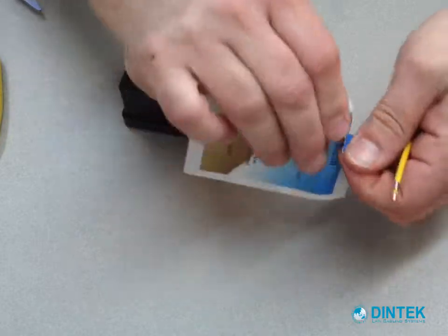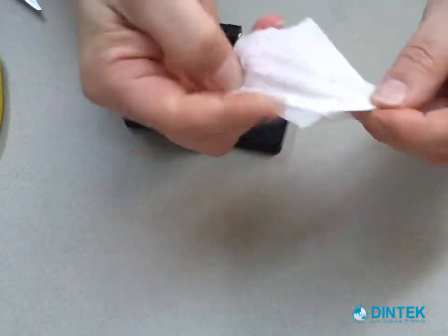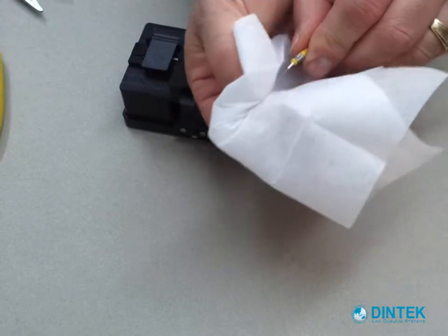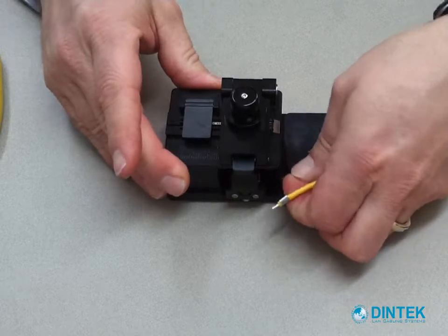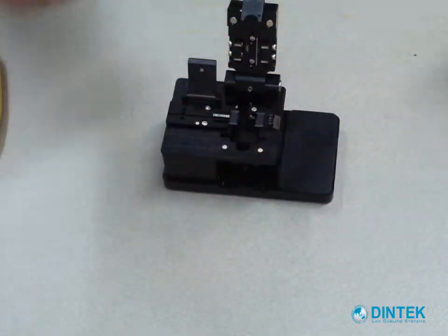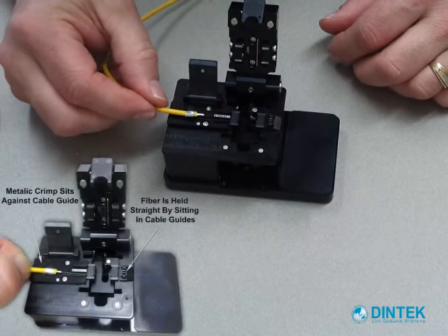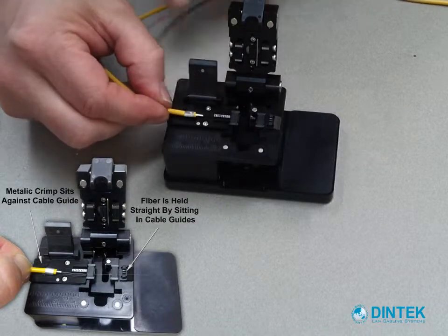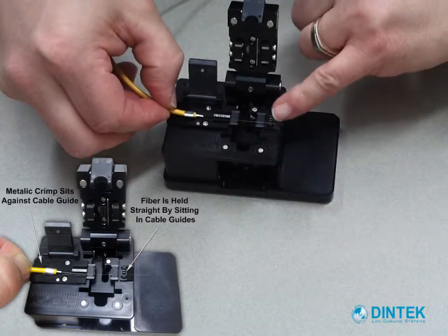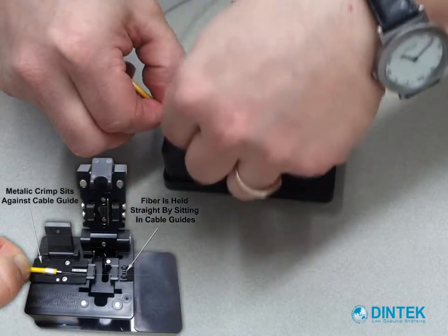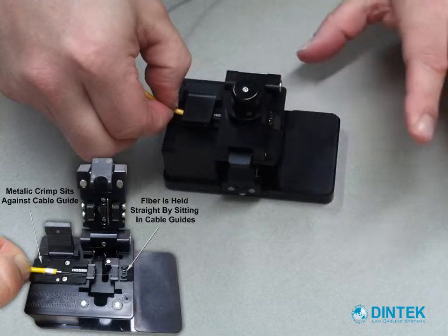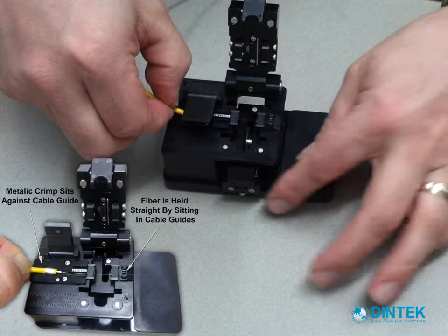Next we take our wipe and give the fiber a clean. We have got our cleaver so we will open up the cleaver lid, pushing the cleaving arm backwards. Taking our fiber, we are going to sit that at the back. The edge of the crimp sitting where the cable guide is and laying the front of the fiber into the opposite end of the cable guides. Close the lid, push the cleaving arm forward, push the button down, and remove our fiber.